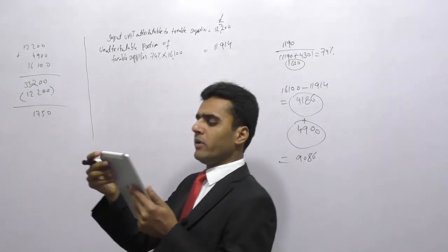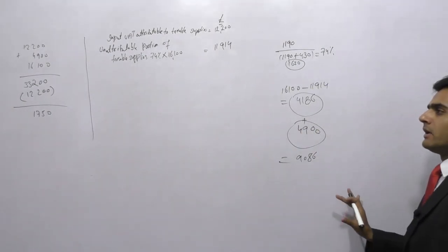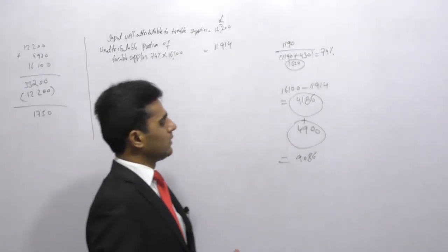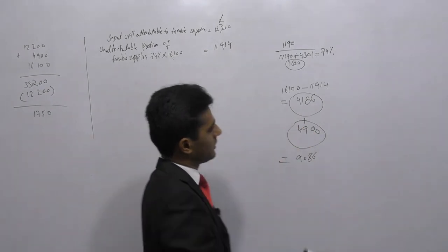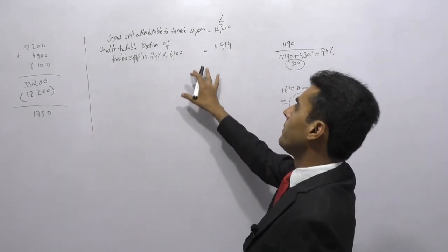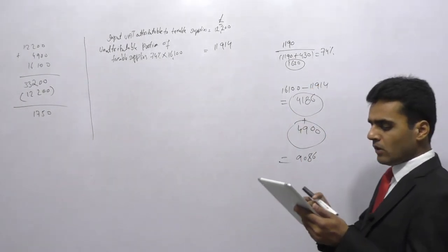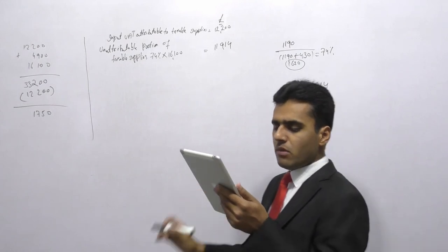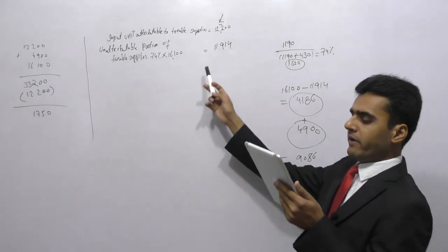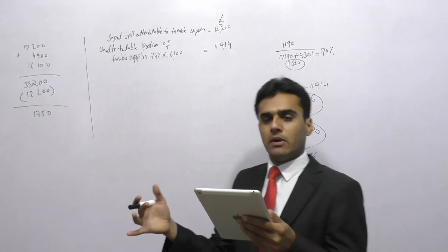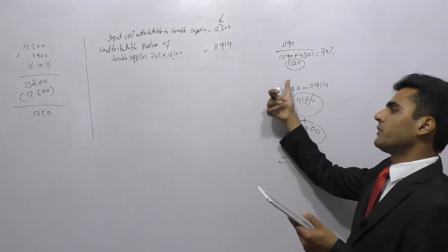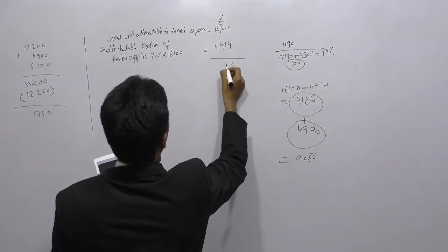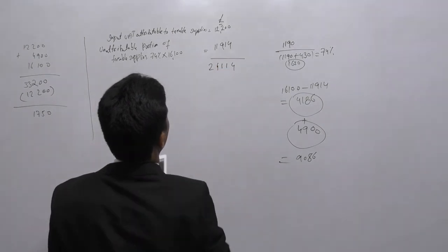In this specific question, none of the three de minimis tests — Test 1, Test 2, or Test 3 — apply. Therefore, the exempt portions are not recoverable. Only the input tax attributable to taxable supplies and the 74% recoverable portion of the residual (£11,914) are recoverable. The total recoverable input VAT is £12,200 plus £11,914, which equals £24,114.